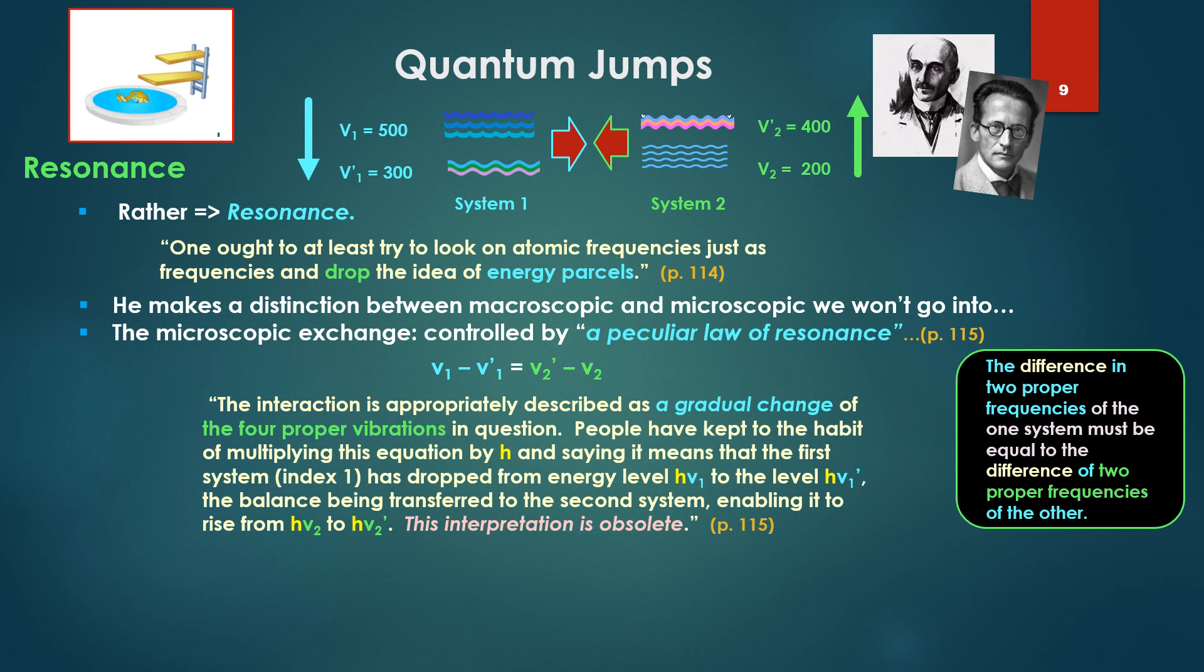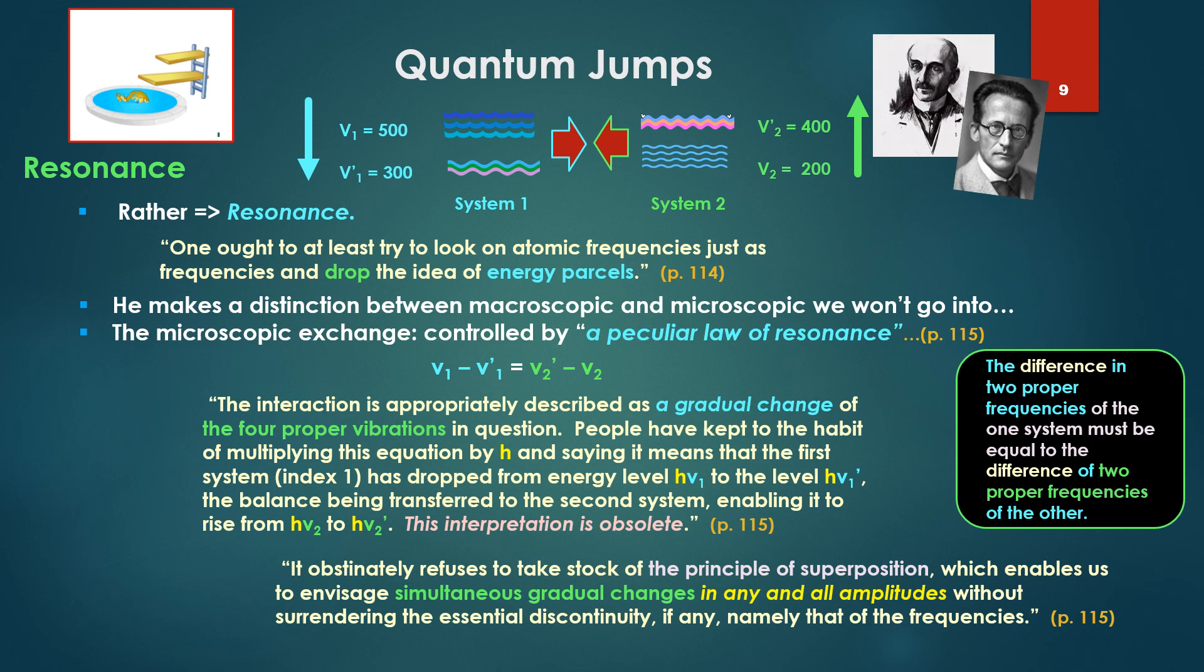People have kept to the habit of multiplying this equation by h, and saying it means that the first system, index 1, has dropped from energy level h ν₁ to level h ν'₁, the balance being transformed to the second system, enabling it to rise from h ν₂ to h ν'₂. This interpretation is obsolete. It obstinately refuses to take stock of the principle of superposition, which enables us to envision simultaneous gradual changes in any and all amplitudes without surrendering the essential discontinuity, if any, namely that of the frequencies.